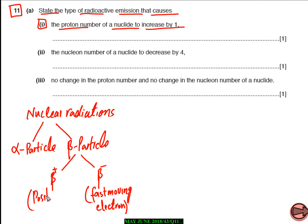What is beta plus? Beta plus is the antiparticle of an electron, and we often call it a positron. So beta plus is the antiparticle of the electron, and its name is positron.